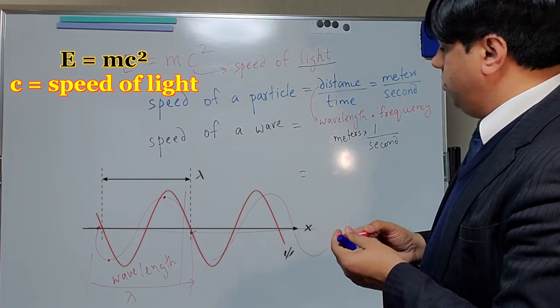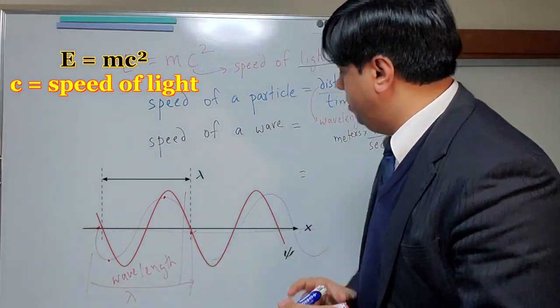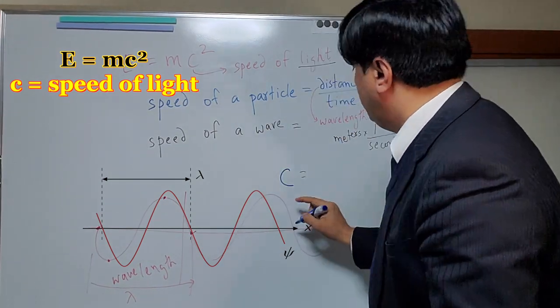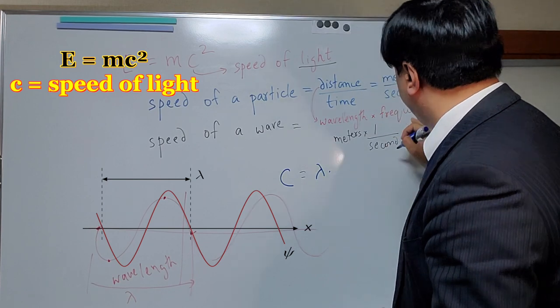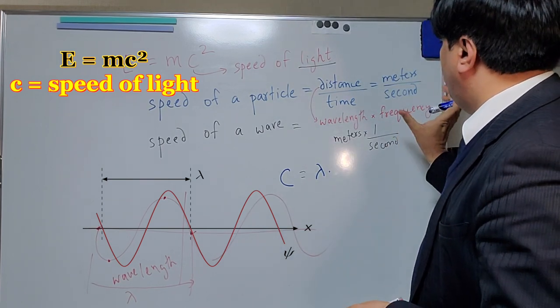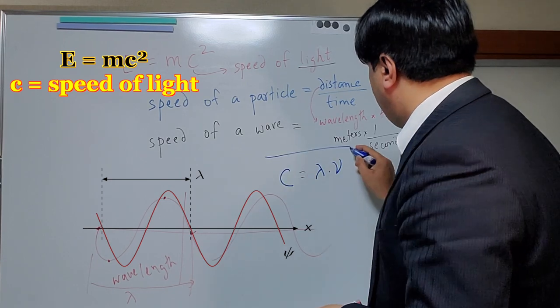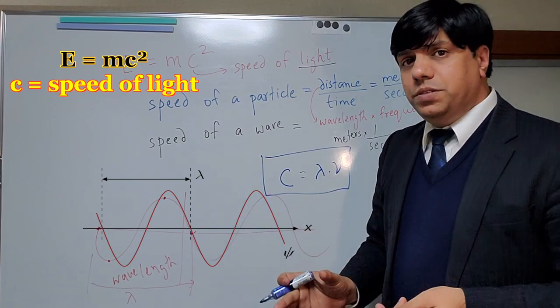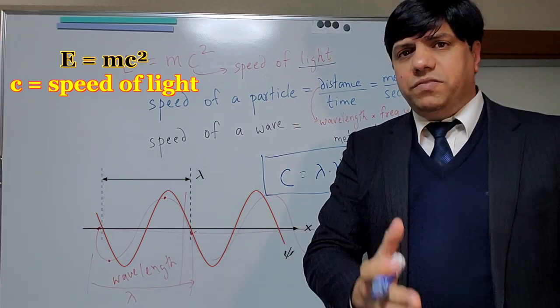Wavelength is meter or centimeter or micrometers, and frequency is per second. So even though distance over time and wavelength times frequency, they look different, but at the heart of it, they're actually measuring the same thing. They're measuring the speed of something in meters per second. The speed of something is always meters per second. In physics, we can say speed of light is C equals lambda, which is the wavelength, times frequency.